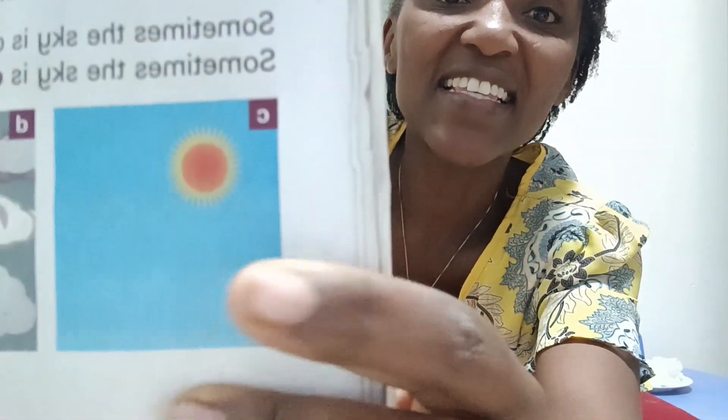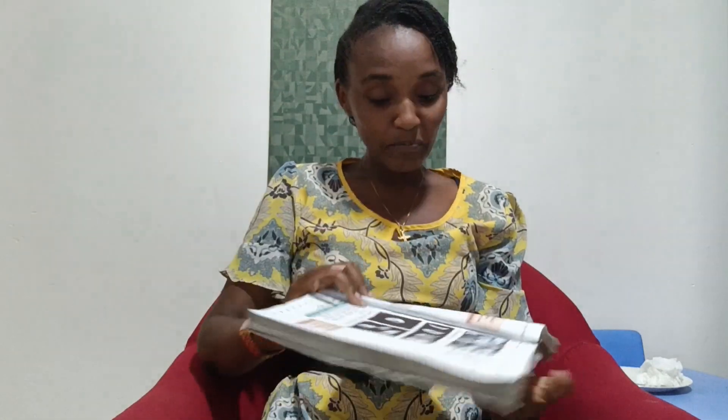So our topic today, we'll be talking about how when you observe the sky, what do you see? You see during the day — look at this — you see the sun and the blue sky. Beautiful. Very beautiful. And there are normally clouds sometimes. There are clouds during the day. Can you see that? There are clouds, and the sun is there.